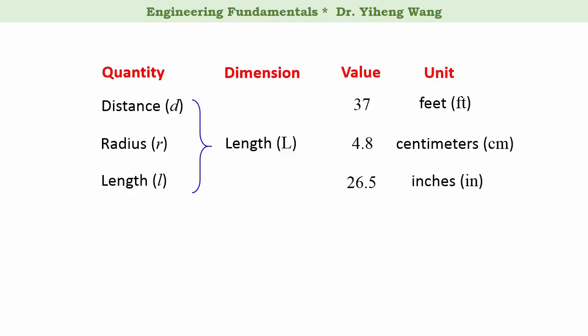Now let's look at some other examples. Another very important quantity is time, normally represented by the symbol small-case italic t. Since time is also one of the seven base quantities, its dimension is also time, represented by the symbol capital T. We can use a stopwatch to measure a time period and get a measurement of, for example, 19 seconds.